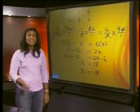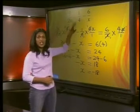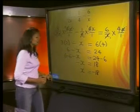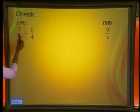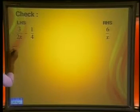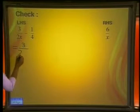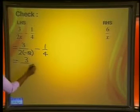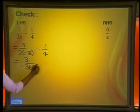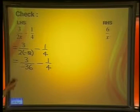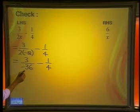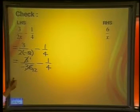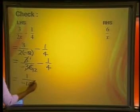Let's check our answer. If we substitute negative 18 into our original equation, our answer will be correct if the left-hand side is equal to the right-hand side. The left-hand side is equal to 3 divided by 2x minus a quarter. Substituting negative 18 for x: 3 divided by 2 times negative 18 gives me negative 36, minus a quarter. We can simplify this fraction further — 3 goes into 3 once, 3 goes into 36 twelve times, so we are left with 1 divided by negative 12 minus a quarter.